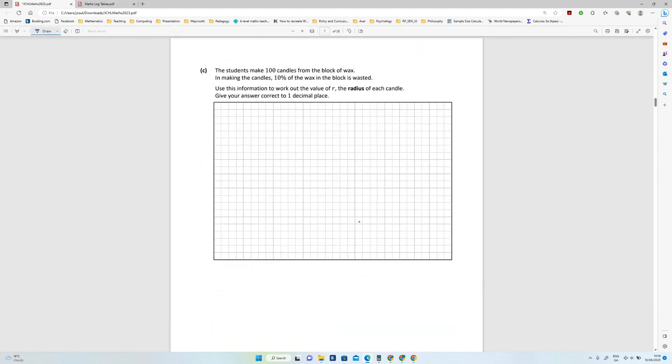Just write that down, so 25200 subtract 10% of it. So that's what we need to work out. Use this information to work out the value of r, the radius of each candle.